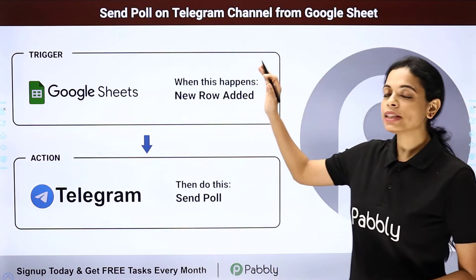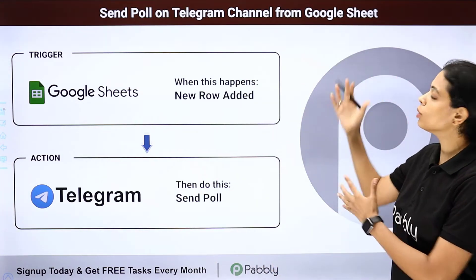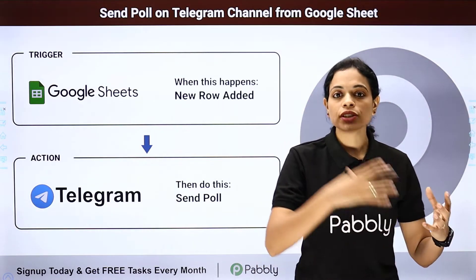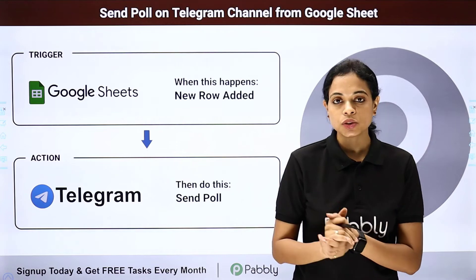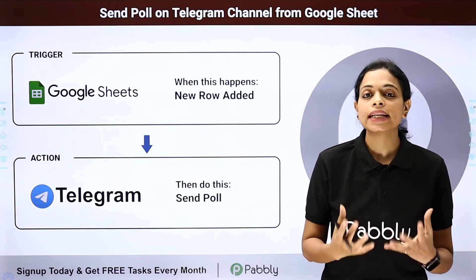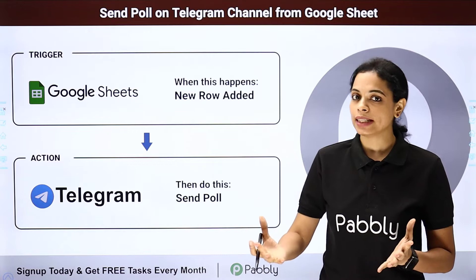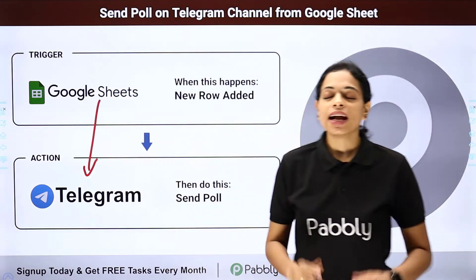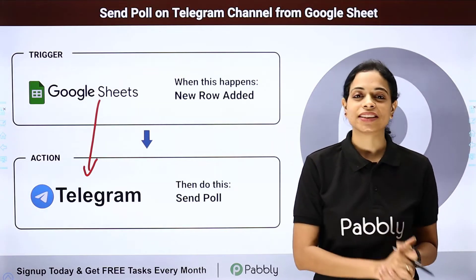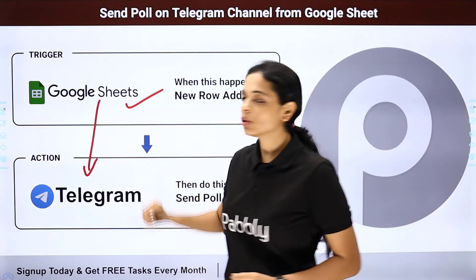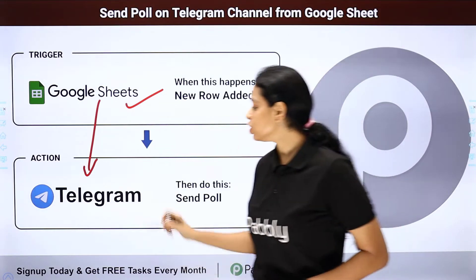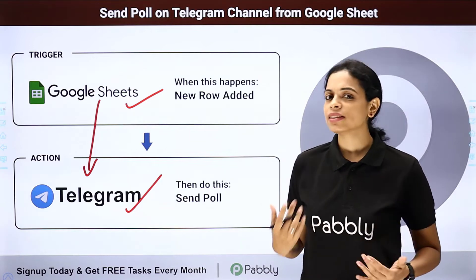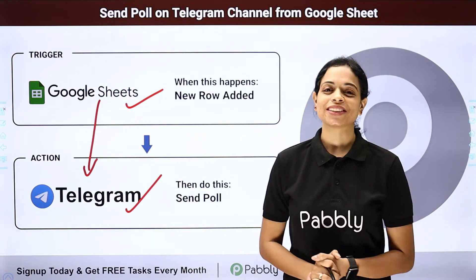In this video, we are going to see how to send a poll on a Telegram channel from Google Sheets. You have some data on your Google Sheets where you have certain questions, options, explanation, etc. With this information, you would want to create a poll and send it on Telegram. For this, you will have to integrate these two applications, and the same can be done using PabblyConnect software. Your trigger application would be Google Sheets and your action application would be Telegram. To understand how to integrate and automate this entire process, let me take you to my screen.